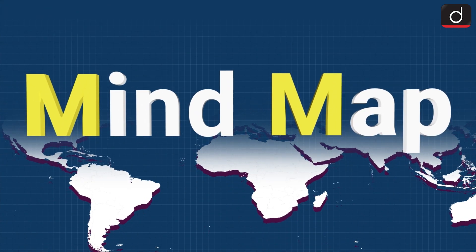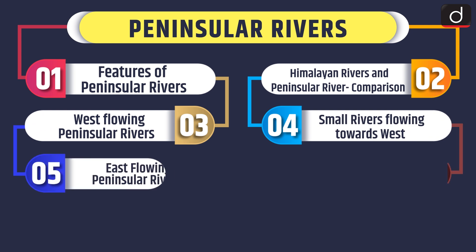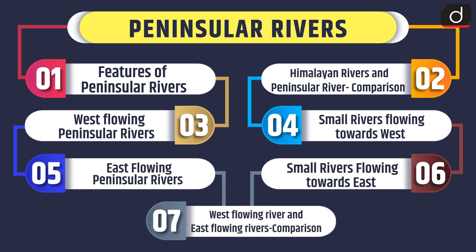Hello and welcome to another episode of Mind Map. Today's topic of discussion is Peninsular Rivers. We will discuss the features of Peninsular Rivers, Himalayan Rivers and Peninsular River comparison, west flowing Peninsular Rivers, small rivers flowing towards west, east flowing Peninsular Rivers, small rivers flowing towards east, and west flowing versus east flowing rivers comparison.